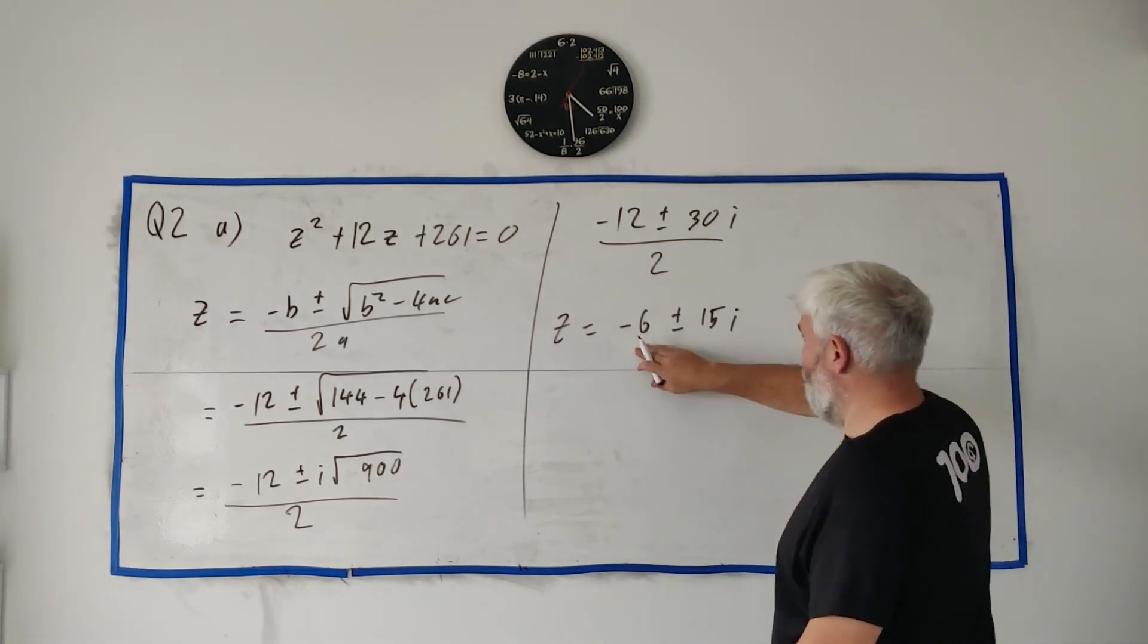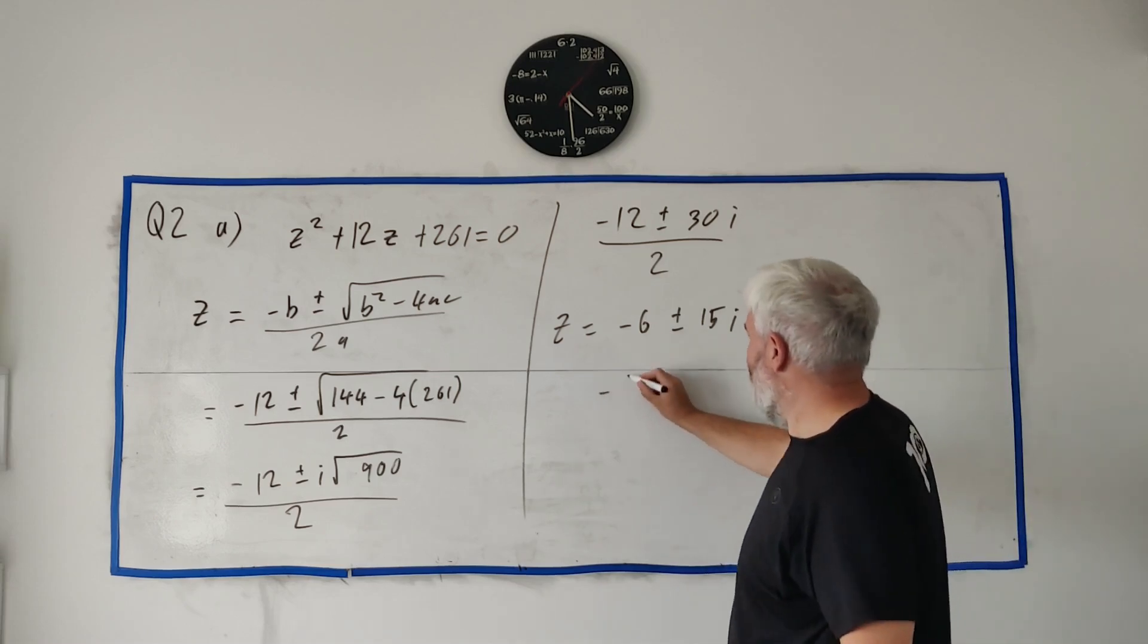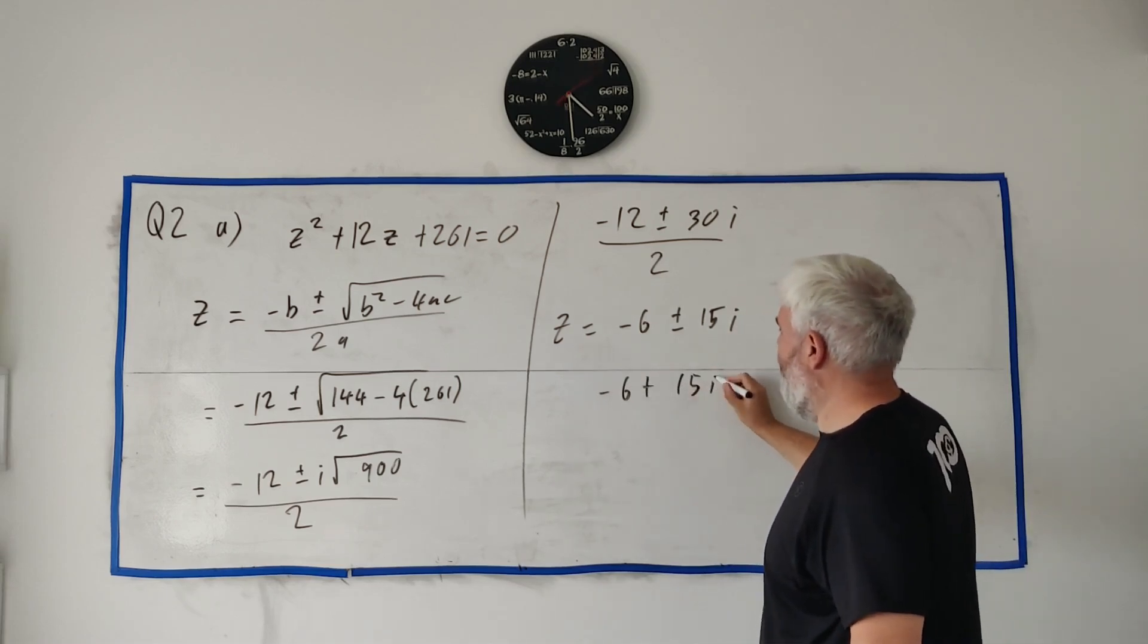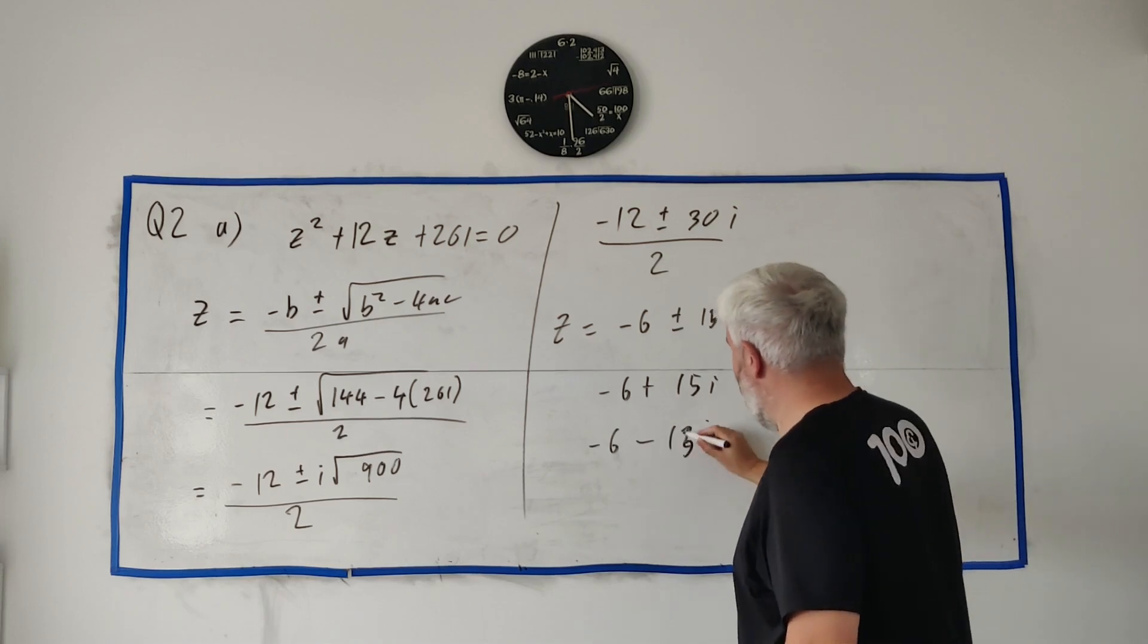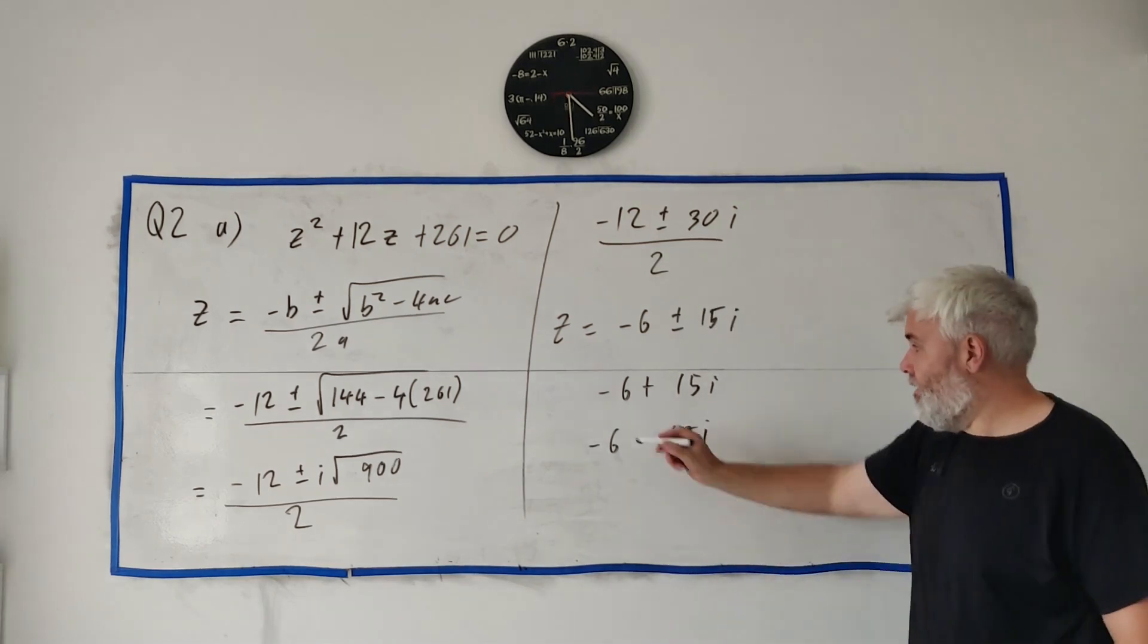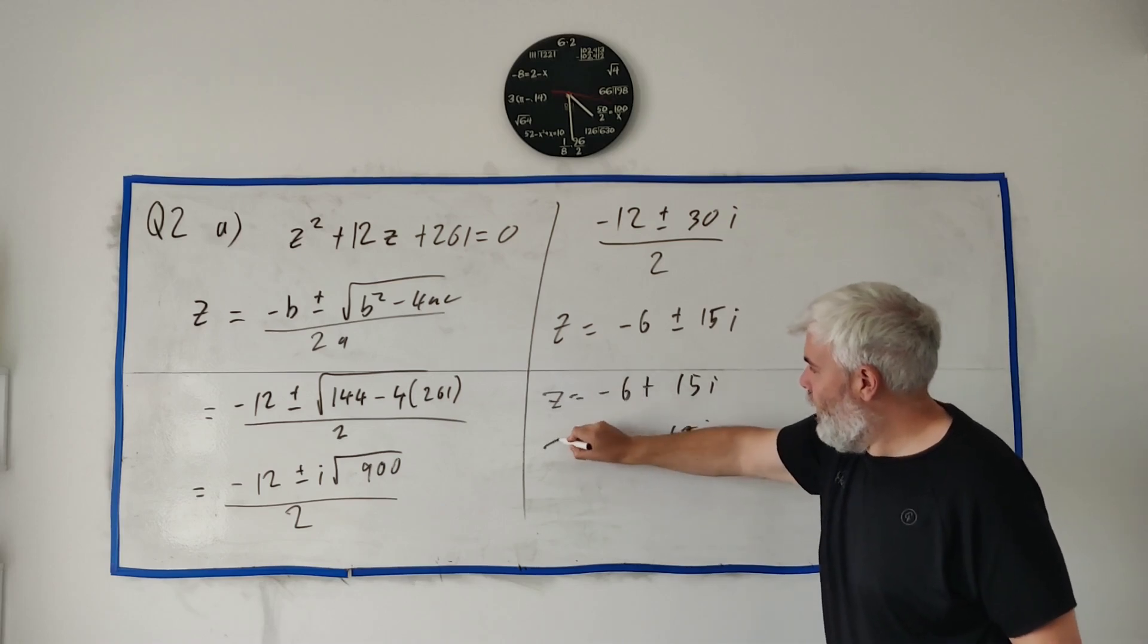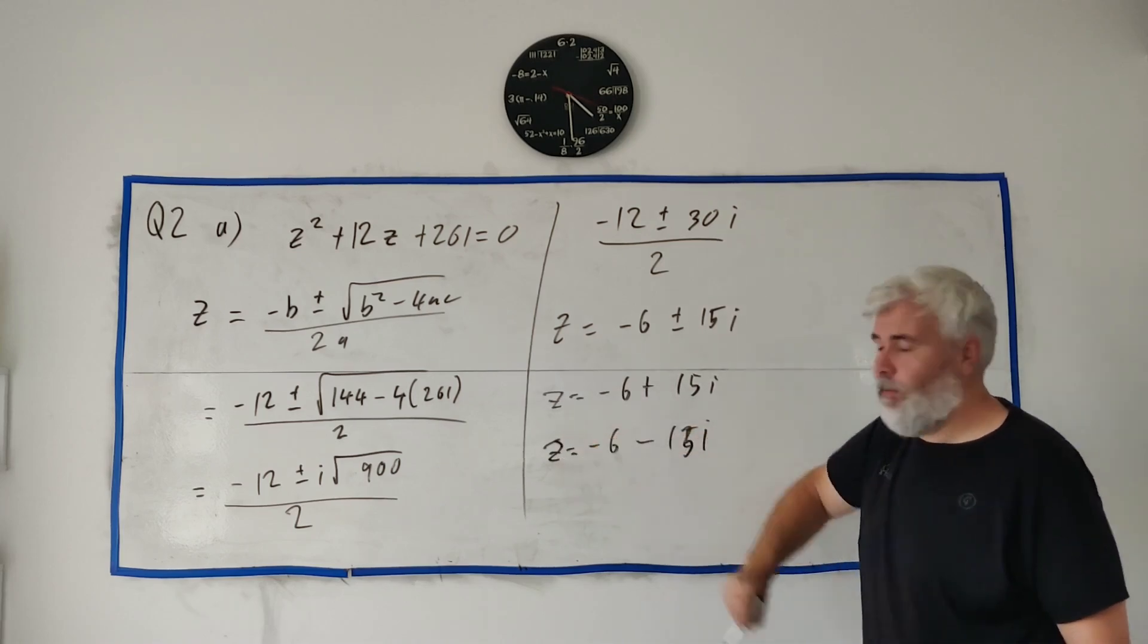Remember, Z equals this. This is minus 6 plus or minus 15I. And that should get you full marks. But just to be sure, write it out two times. Just write minus 6 plus 15I and write minus 6 minus 15I. That's part A.